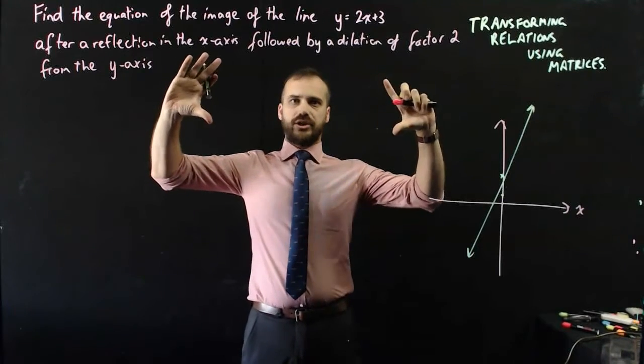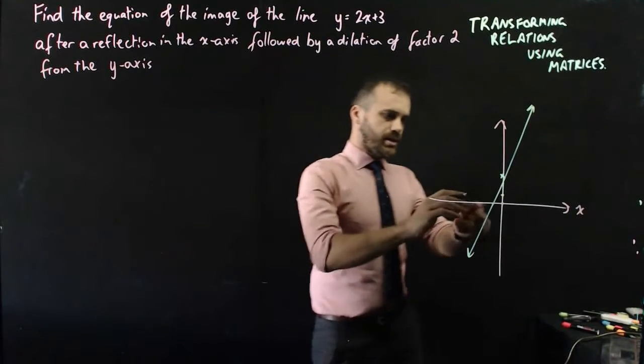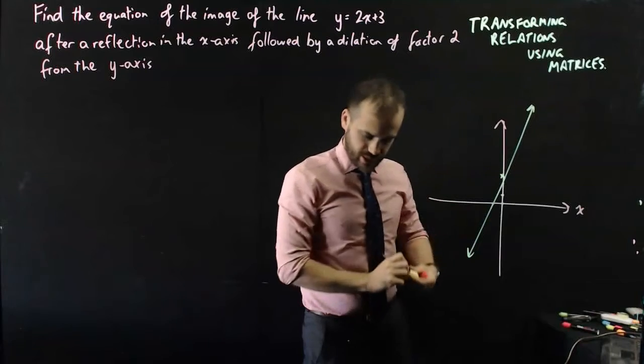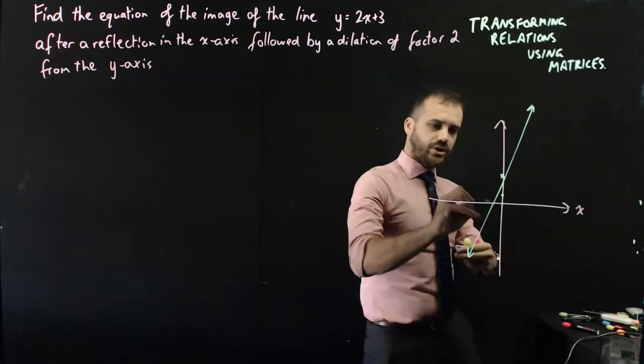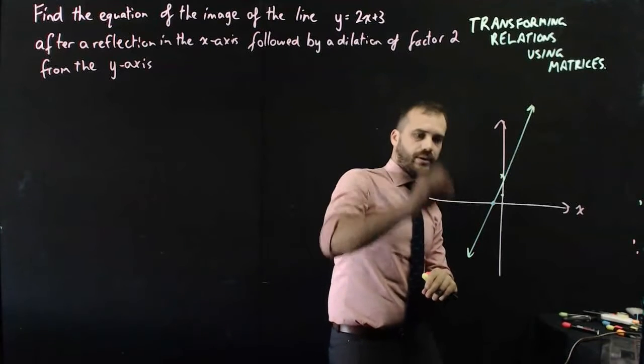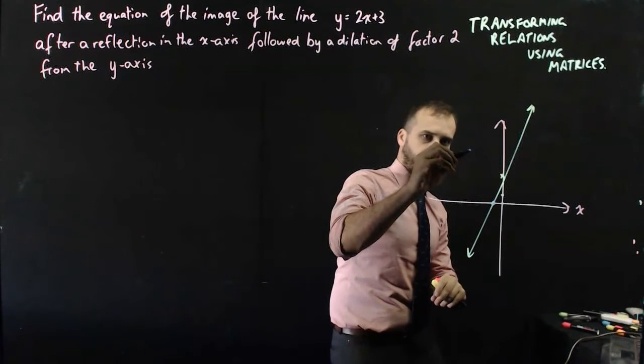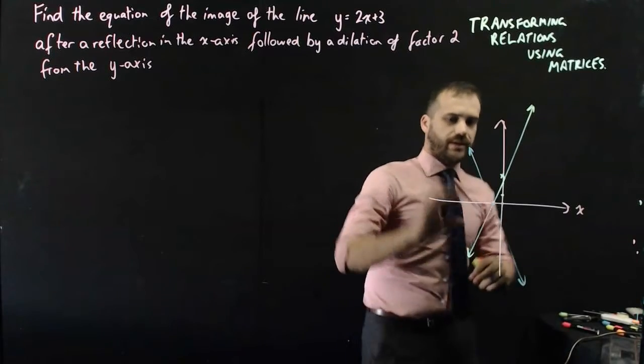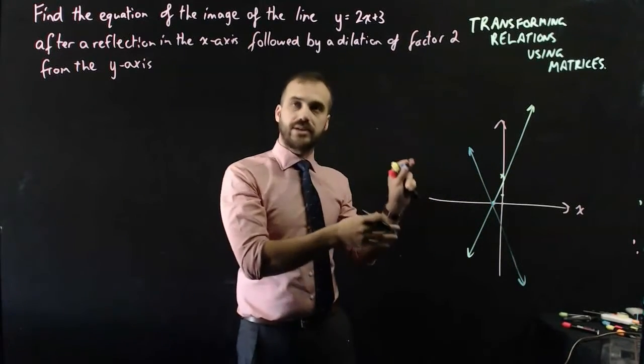Okay, what happens after a reflection in the x-axis? So I take my line and I reflect it in the x-axis, flipping it around that point. And so it should end up looking like that. That's a pretty good reflection in the x-axis.